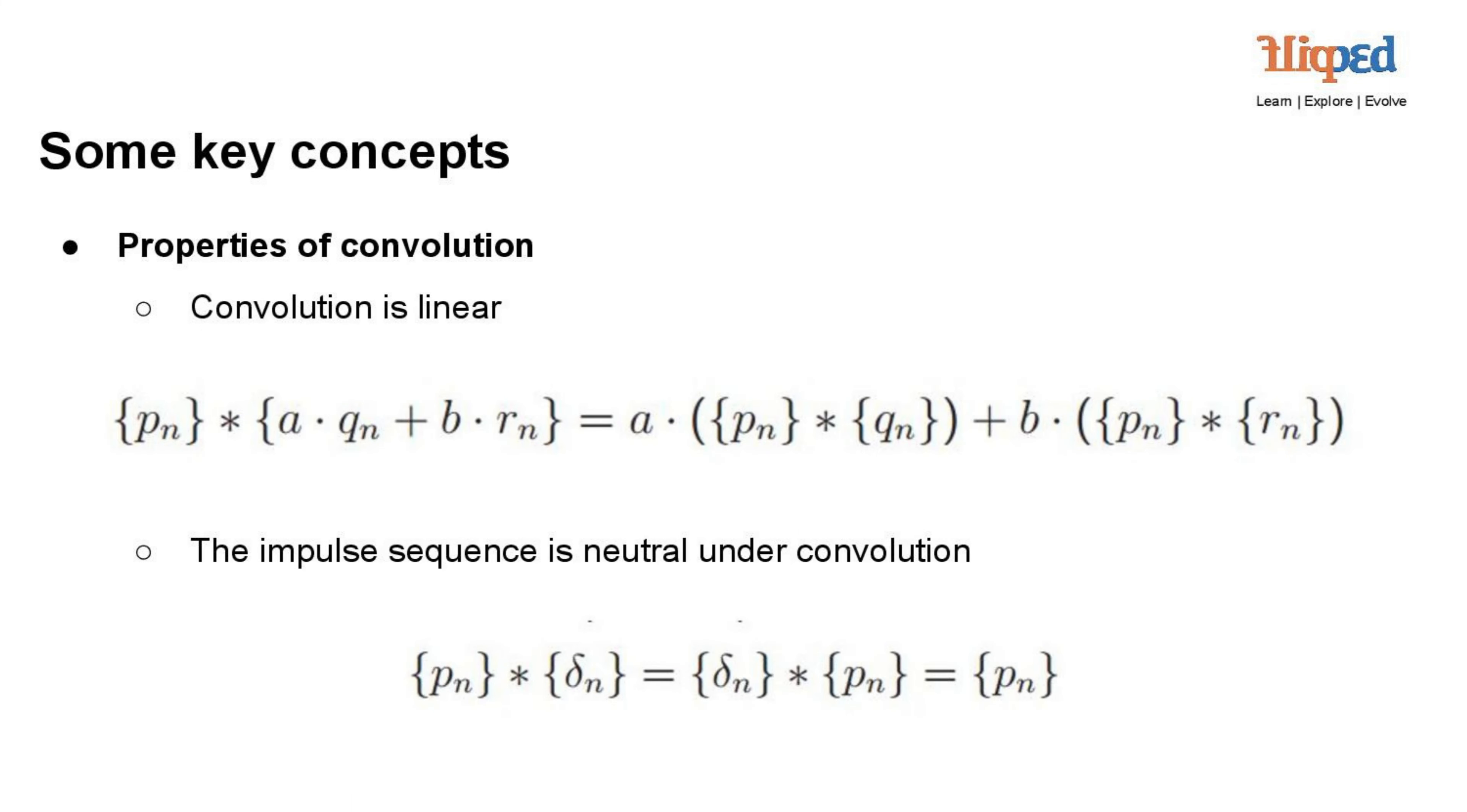Convolution is a linear operation, meaning it satisfies the principles of superposition and homogeneity. When two sequences A·p(n) and B·q(n) are convolved, the result is equal to: